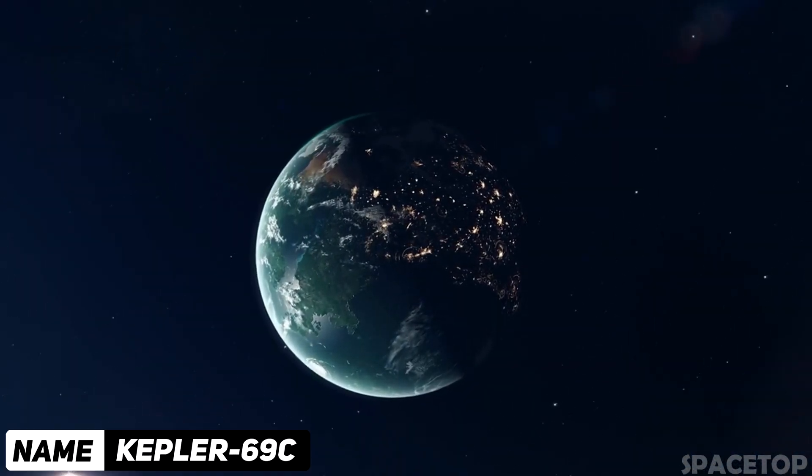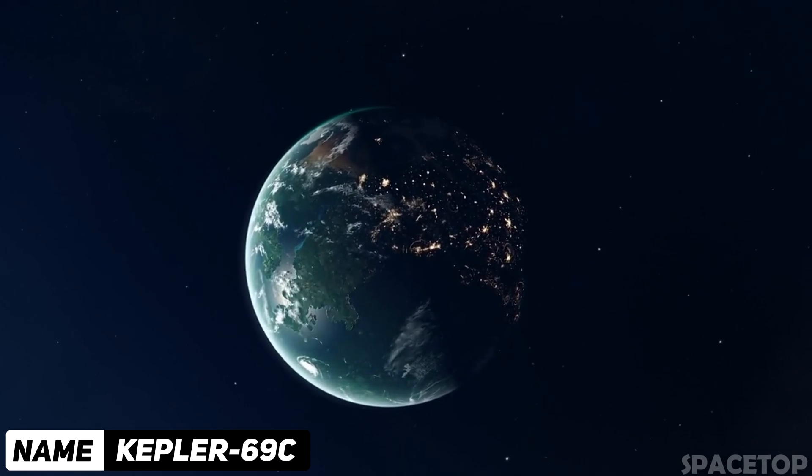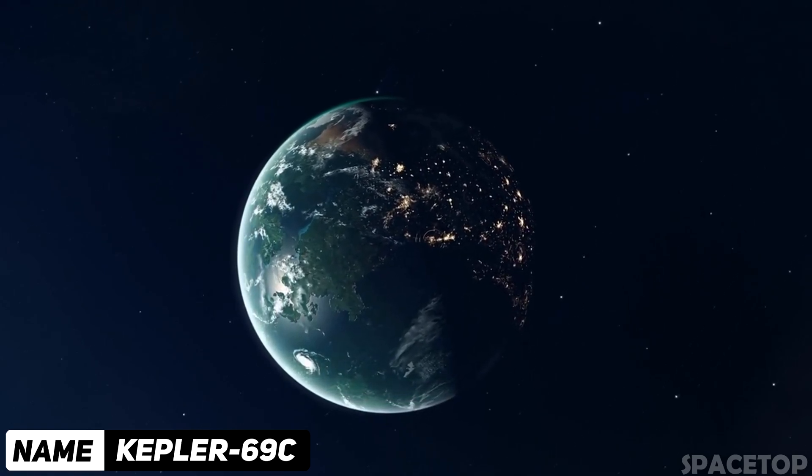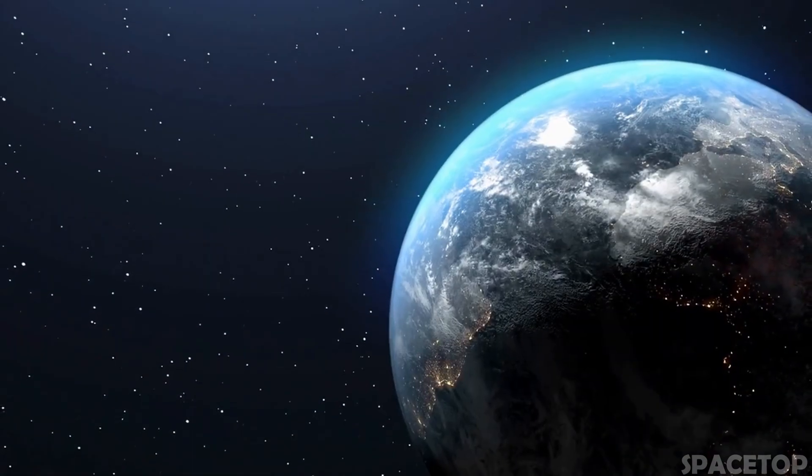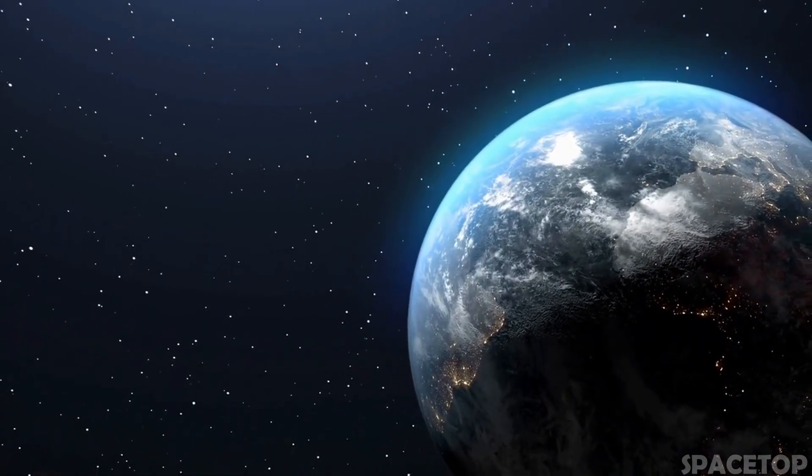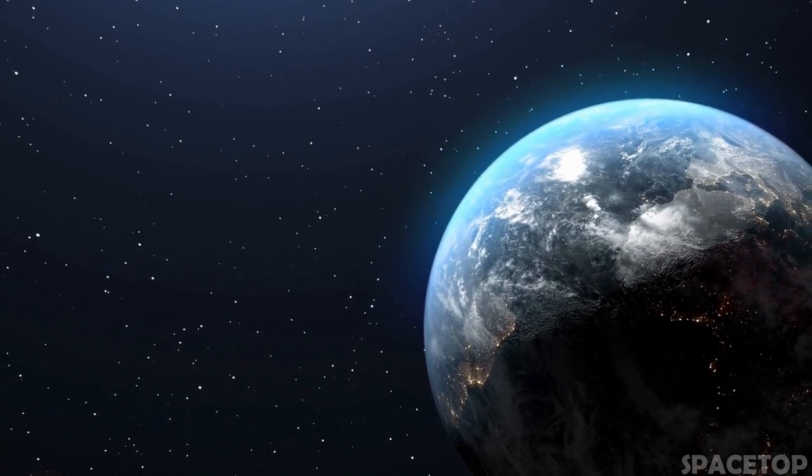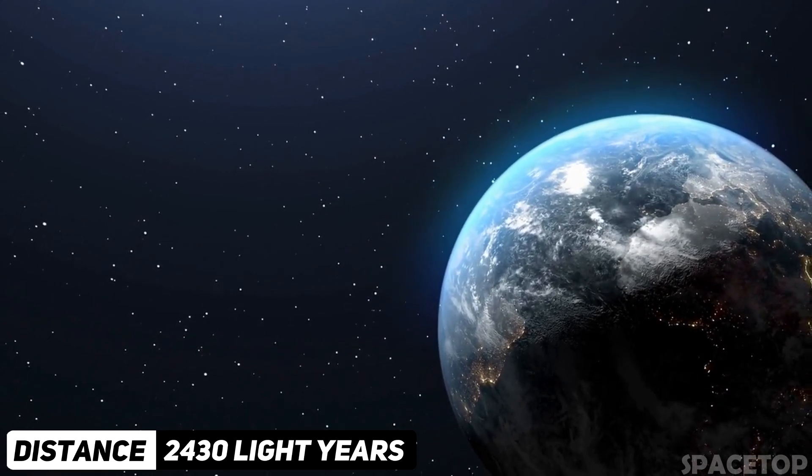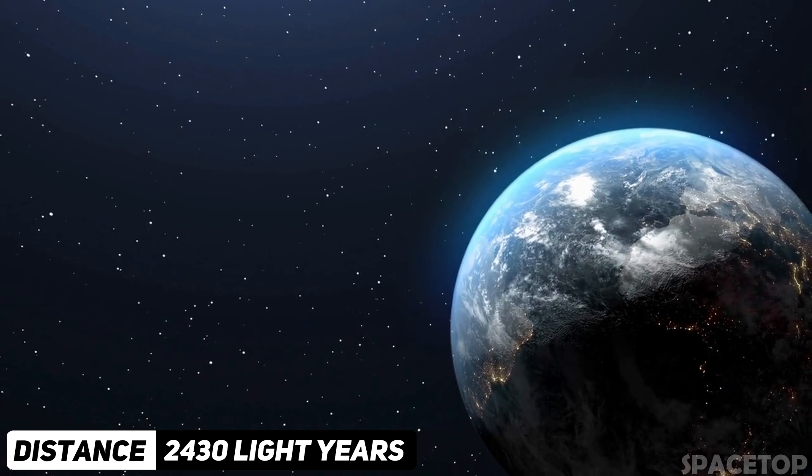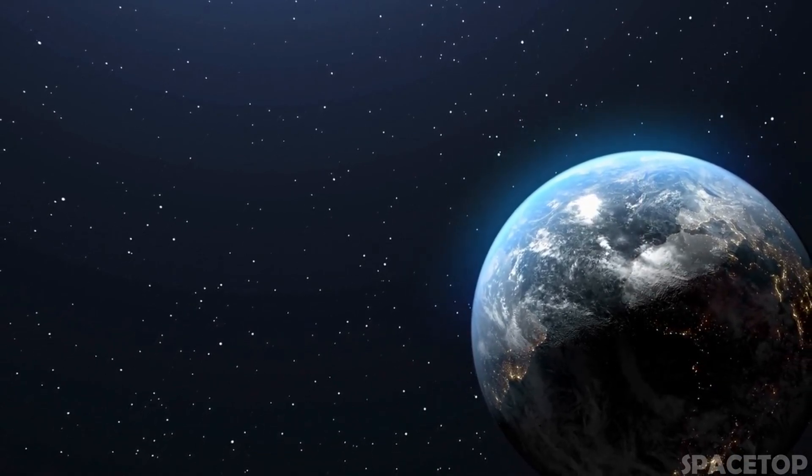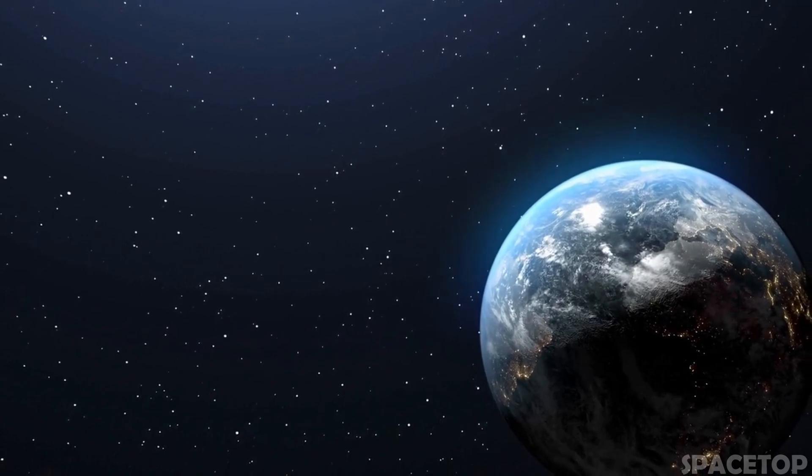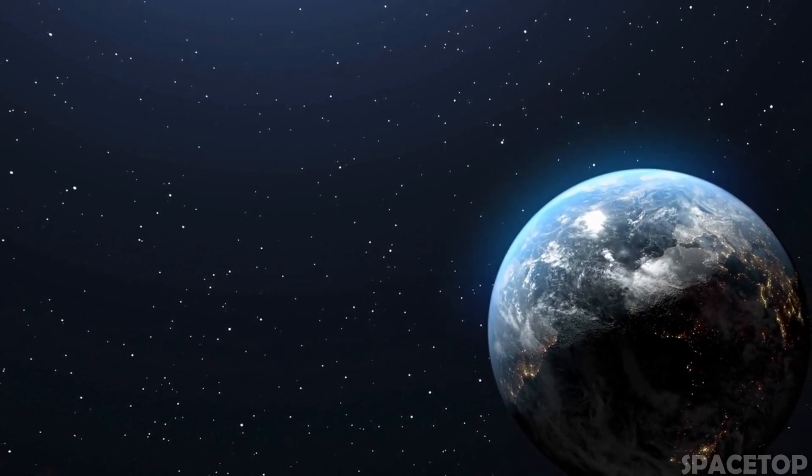The next potentially habitable object on our list is Kepler-69c, discovered by the Kepler telescope on April 18th, 2013. It is a super-terrestrial extrasolar planet located at a distance of 2,430 light years from Earth. It orbits the star every 242 days, which is similar to the orbital period of Venus, and its mass is twice that of Earth.